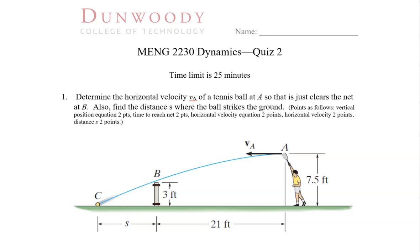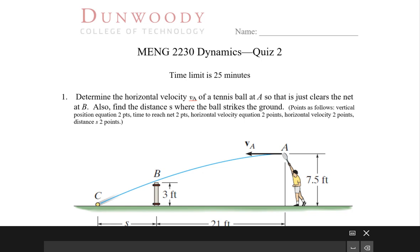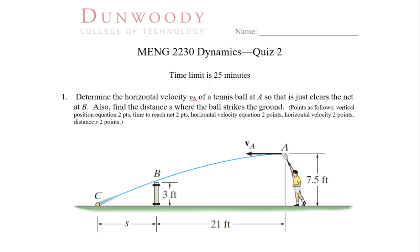Okay, we'll walk through the solution to the Dynamics Quiz 2 solution. Here's our problem statement here. So we have a tennis player who's about to hit the ball, or he does hit the ball.